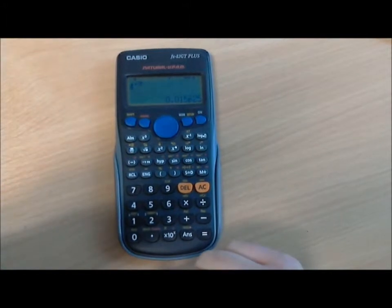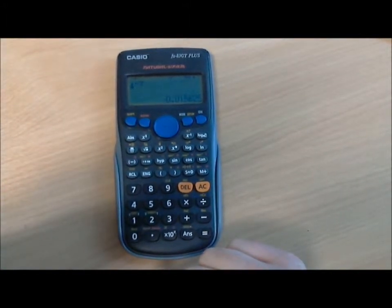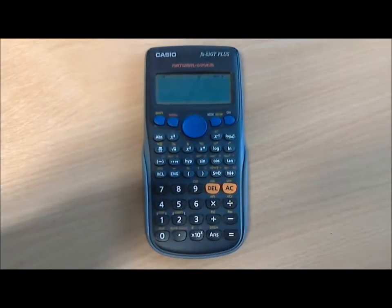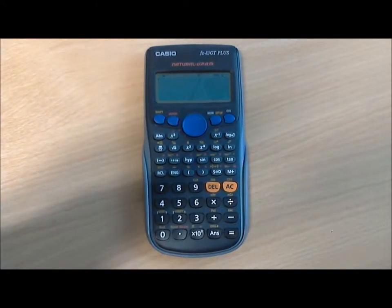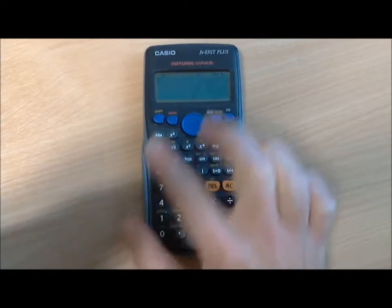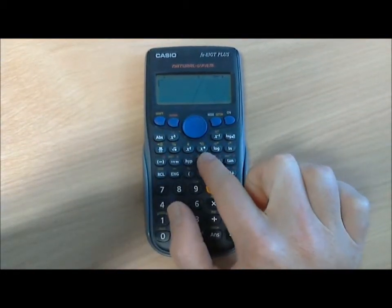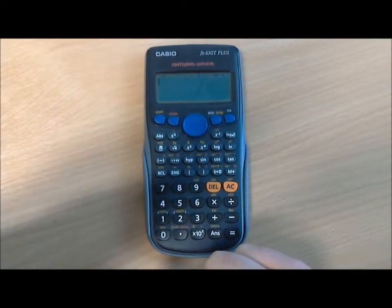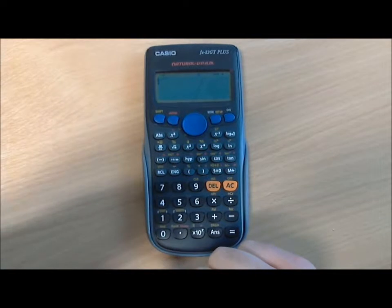To get a root on your calculator, you generally use the combination of the shift function up here with your power button. In this case it's x to the power of a block, but on your calculator it might be y to the power of x.